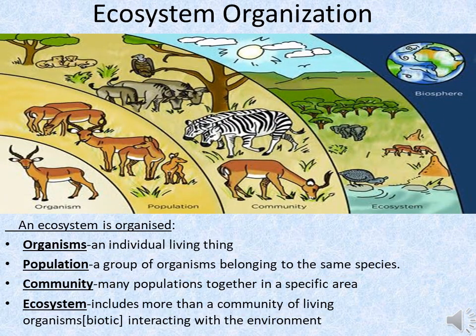Now since you have developed a good understanding about the biotic and abiotic components of the ecosystem, we will now step further towards ecosystem organization. When we talk about ecosystem organization, we are generally talking about only the biotic components. As you can see in the image, the ecosystem is organized into organisms, population, and community.